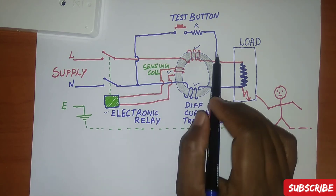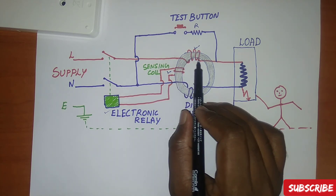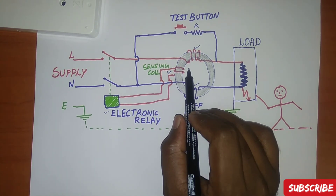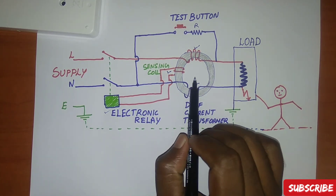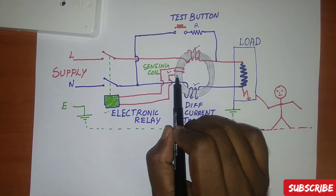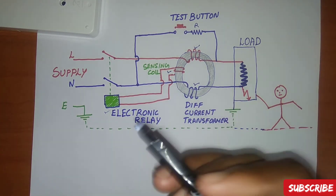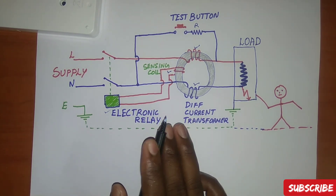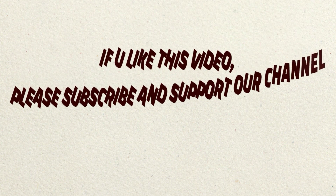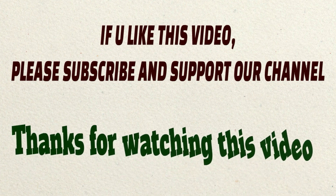The test button is connected between neutral and line through a resistor. When you press the test button, it allows the correct operation of the device to be verified by passing a small current, simulating a fault by creating an imbalance in the sense coil. If the RCD does not trip when the button is pressed, the device must be replaced. RCD testing should be done on a regular basis. My next video is on the difference between ELCB and RCD — please subscribe and support the channel. Thanks for watching.